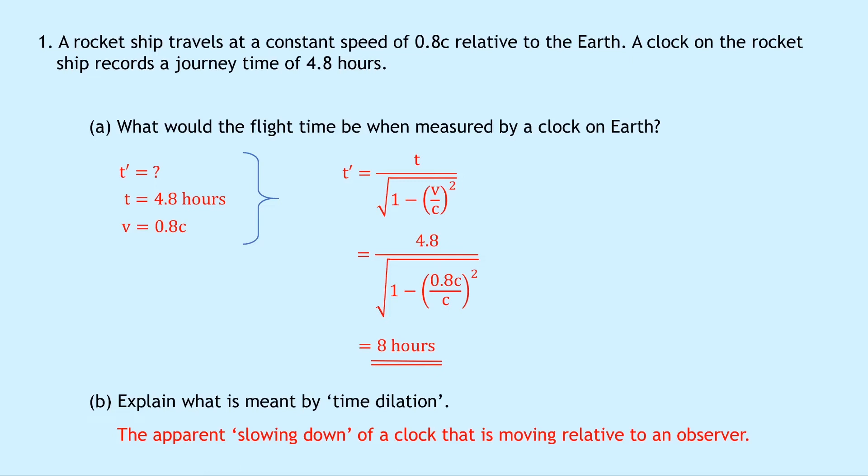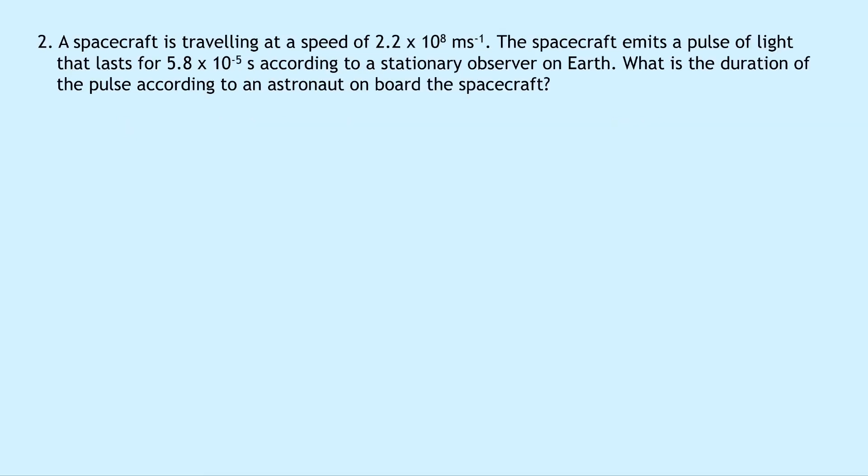Question 2 says that a spacecraft is traveling at a speed of 2.2 × 10⁸ meters per second. The spacecraft emits a pulse of light that lasts for 5.8 × 10⁻⁵ seconds according to a stationary observer on Earth. What is the duration of the pulse according to an astronaut on board the spacecraft?